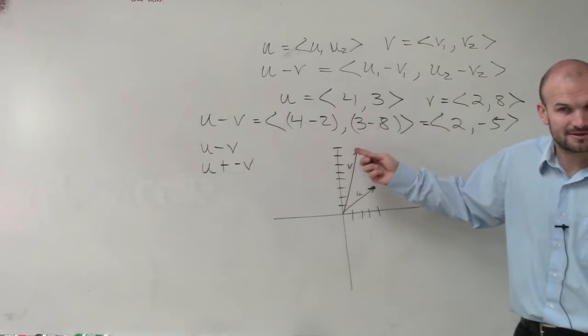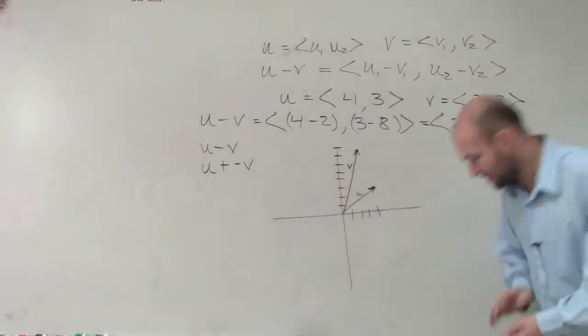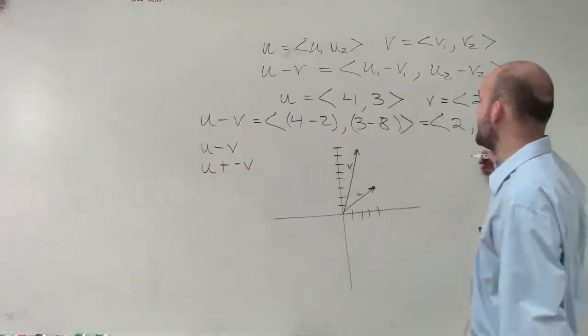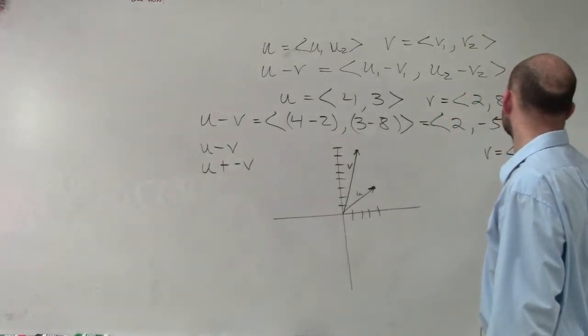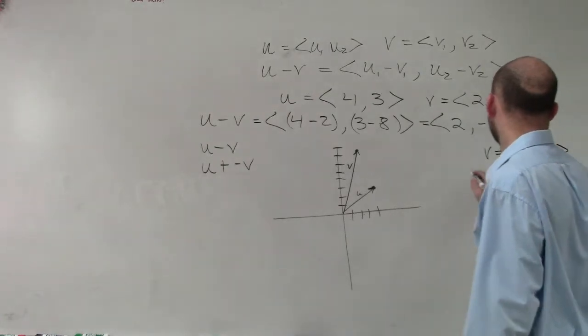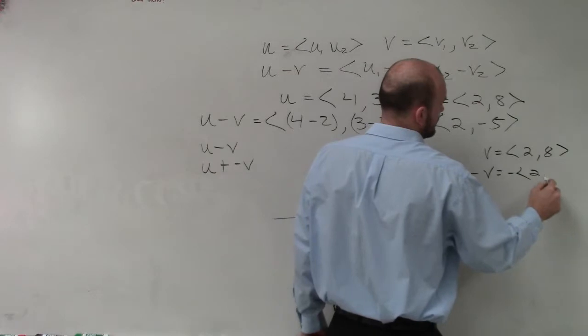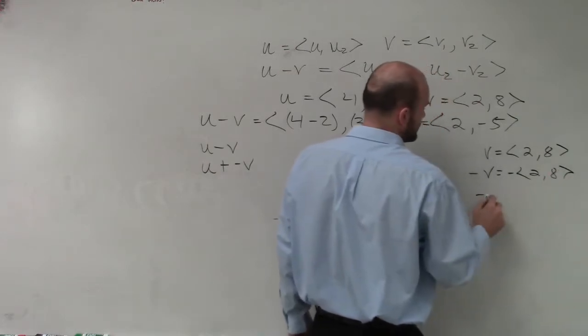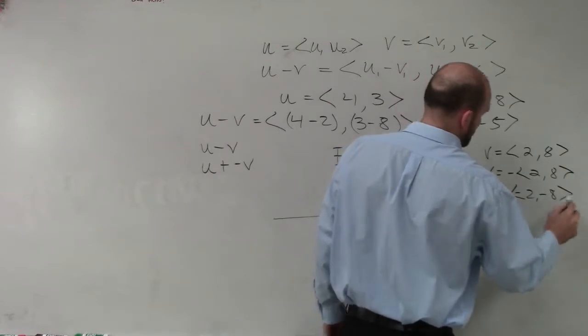If this is what v is, what's the negative? Well, remember, that's going back to the scalar, right? So if we say v is equal to 2 comma 8, what is negative v? Well, that becomes the scalar, which equals negative 2 comma negative 8. Okay?